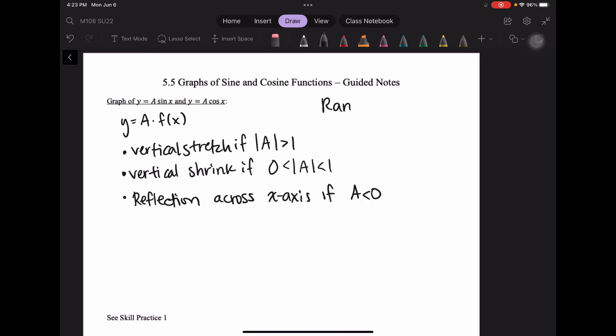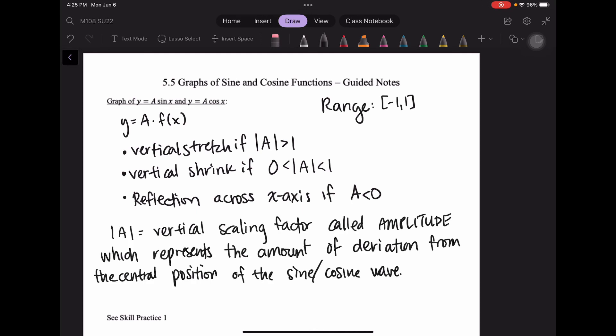Remember our range is between negative 1 and 1 inclusive. The absolute value of a is called the amplitude. It's the vertical scaling factor which represents how much you deviate from that central position of the sine and cosine wave. What happens to the negative 1 and 1 range? Are we stretching it? Are we shrinking it?